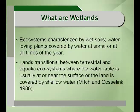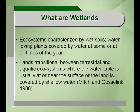These ecosystems are characterized by wet soils and water loving plants, also called hydrophytes. The wetlands are covered by water at some or at all times of the year. The water can be seasonal, intermittent, episodic or permanent depending upon the amount of water present in these wetland ecosystems.